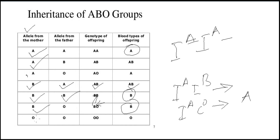In the last case, both parents provide the recessive gene for blood group O, and the offspring will have blood group O.